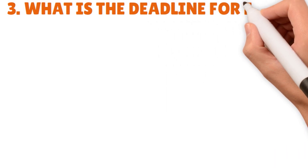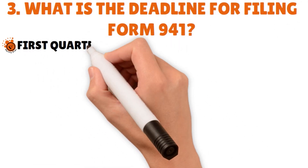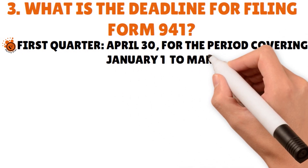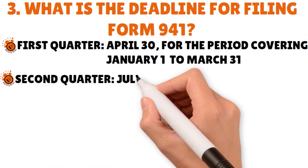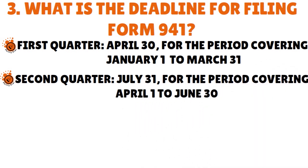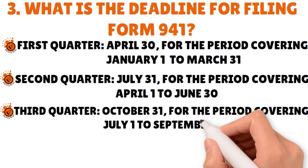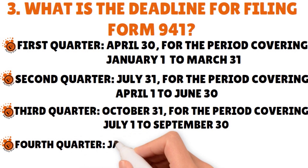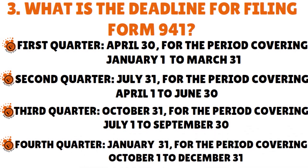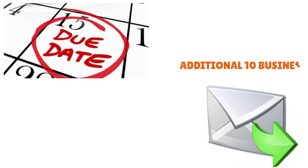What is the deadline for filing Form 941? The first quarter deadline is April 30th, covering January 1st to March 31st. The second quarter deadline is July 31st, covering April 1st to June 30th. The third quarter deadline is October 31st, covering July 1st to September 30th. The fourth quarter deadline is January 31st, covering October 1st to December 31st. If the due date falls on a weekend or holiday, file by the next business day. If you file by mail, your return is tracked by the postage date, and you get an additional 10 business days if you've paid your employment tax deposit in full and on time.